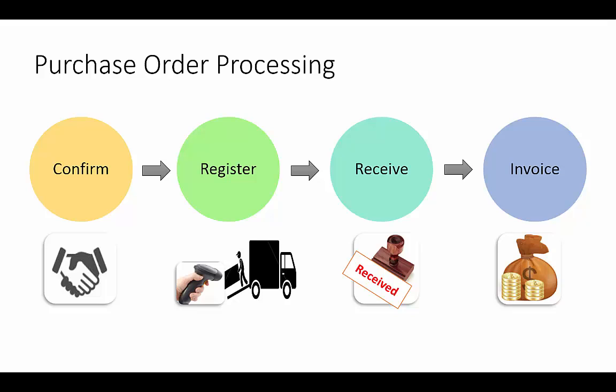It starts with confirming the order details with the vendor. This is an important and mandatory step since it will avoid the possibility of any discrepancy or dispute later. Once we receive the goods from the vendor, we need to register them in the system. For example, if we purchase bicycles, we may need to register the serial and batch numbers, especially if the vendor offers a guarantee and warranty, so that we can track the goods if required. Once the product is registered, it becomes physically available in the warehouse. We then acknowledge the vendor about product receipt and in return, the vendor will send an invoice. As a last step, we need to make a payment to the vendor.